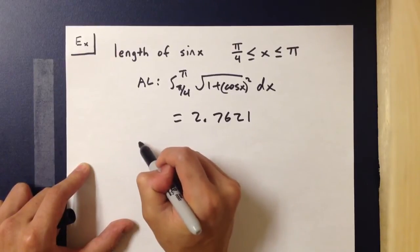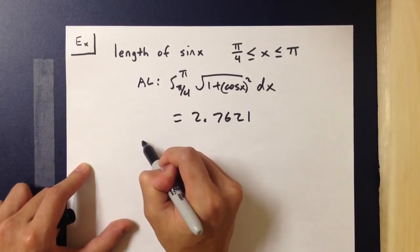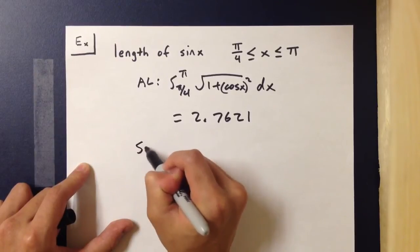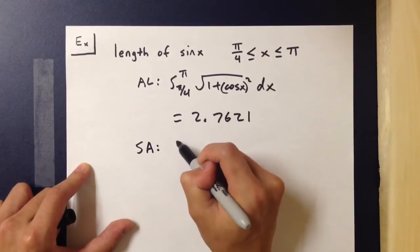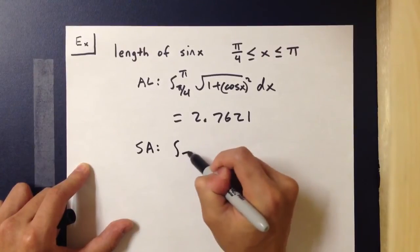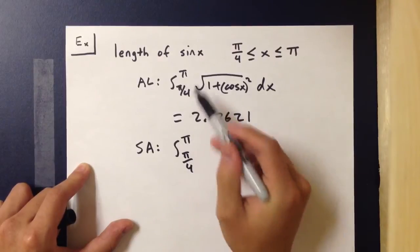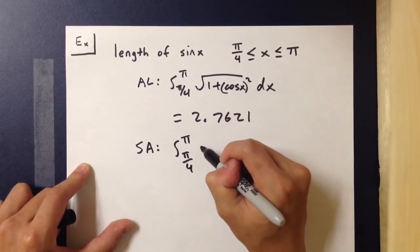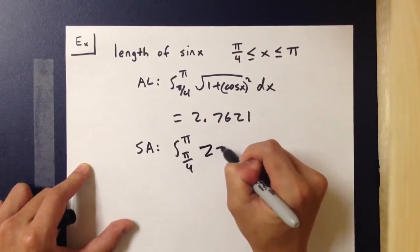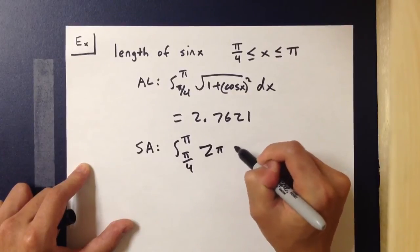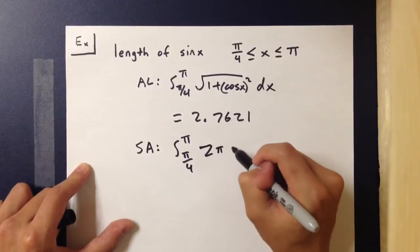And going off of that again, if you were to find the surface area, it would be the integral from π/4 to π—the bounds do not change—of 2π times f(x). In this case, it would be sin(x).